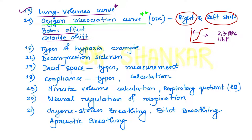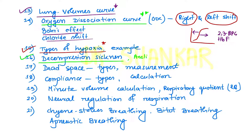The next important topic is types of hypoxia: histotoxic hypoxia, hypoxic hypoxia, anemic hypoxia, stagnant hypoxia — their differences, examples, pathological changes in the body, and their treatment. This is a very important topic. Another important topic is decompression sickness, its management, acclimatization, and changes during acclimatization — acclimatization is a very important topic.